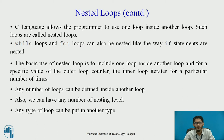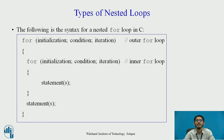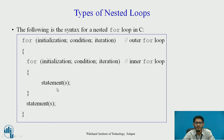Now we move on to the types of nested loops. The following is the syntax for a nested for loop. We have the outer for loop with three sections: initialization, condition, and iteration. Inside this outer for loop, we have a second, inner for loop. Inside the inner for loop are the statements to be executed. After execution of the inner for loop it terminates, then the remaining statements of the outer for loop execute. This happens for every iteration of the outer for loop, and thus the nested for loop works according to the requirement of the application.